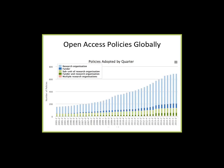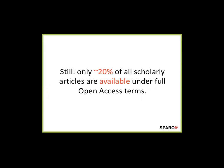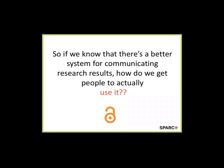That's great — we have a concept, we've done tons of education, and we have lots of infrastructure in place supporting open access adoption. And yet we find ourselves 15 years into this movement with only about roughly 20% of all articles published using full open access terms. That's not perfect, and we have a long way to go. So we spent a lot of time thinking: if we know we have this better system that's open, and we know we have the infrastructure in place, why aren't people using it? How do we get people to actually use it?